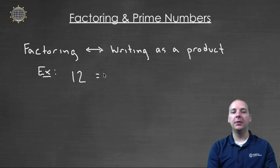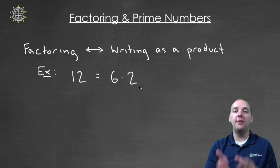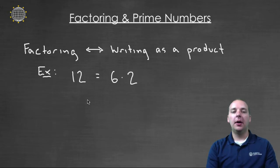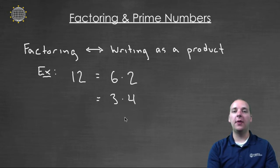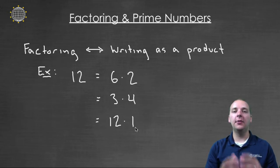One way would be six times two. And we would call the six and the two — we would call those factors of the number twelve. We could also say three times four, that's another way to factor twelve. We could say twelve times one. Any of these ways would be valid ways of factoring the number twelve.